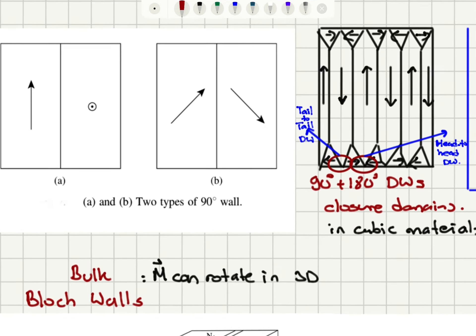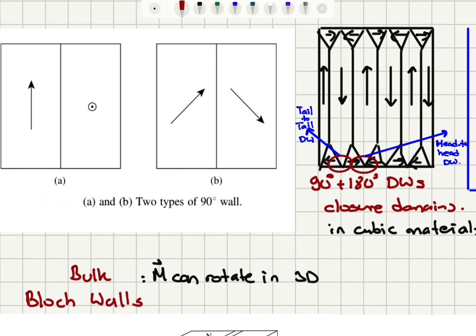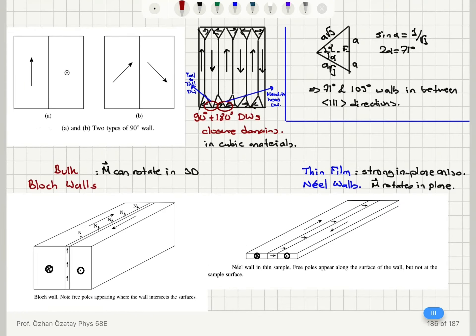Here you can see examples of two 90 degree domain walls, one rotating out of plane and one rotating in plane. Having said that, we have an important distinction between domain walls in the bulk of magnetic materials and in thin films.